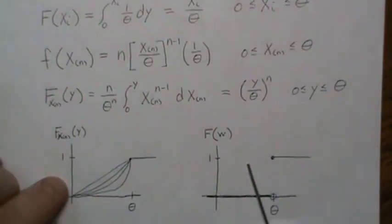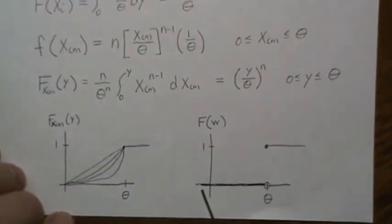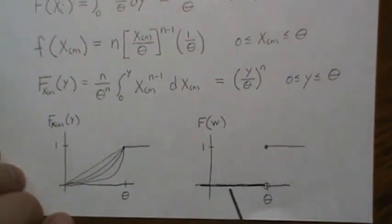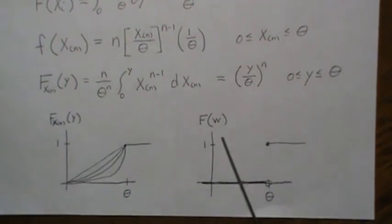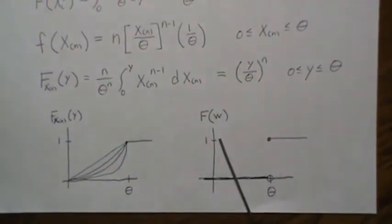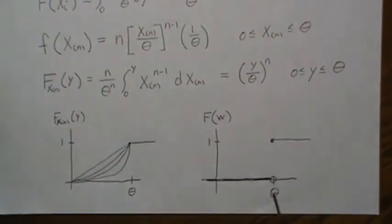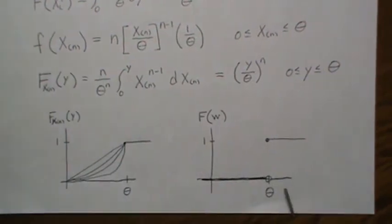And that behaves like some random variable, say w, that is this. That's zero before theta and then one at theta and beyond. And so, but this is a CDF characteristic of a PDF that has only, the random variable w only takes on one value, theta, with probability one.